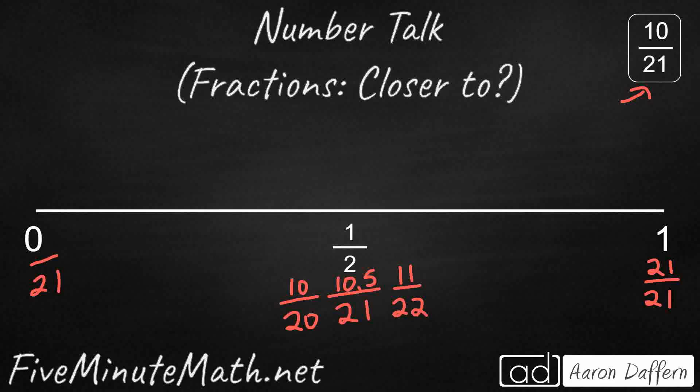And look where this 10 is going to go. If that's 10.5 as my 21, then my 10 21sts is going to be just a little below that, because technically that'd be 10.0 if we wanted to make everything go to the tenths place. So it's just a little bit below.